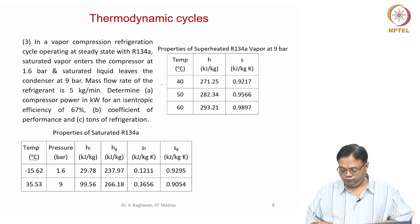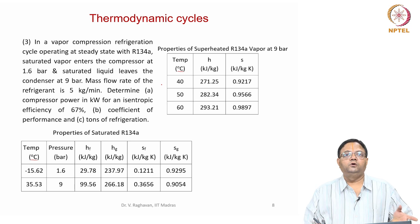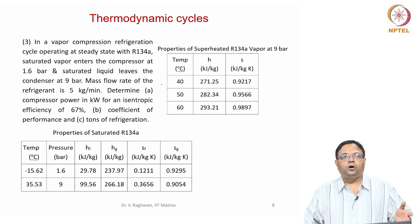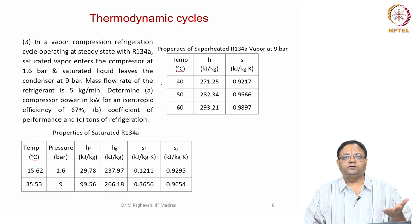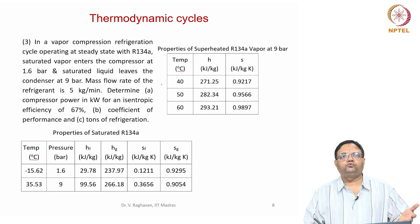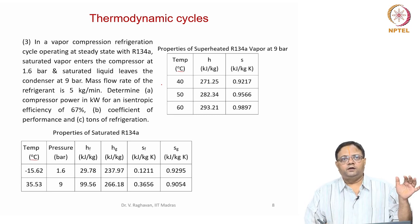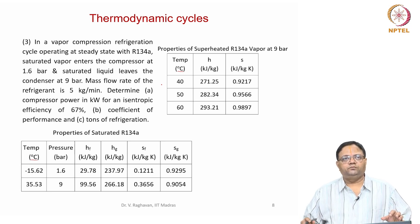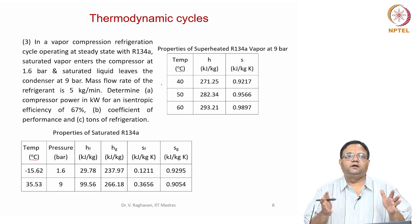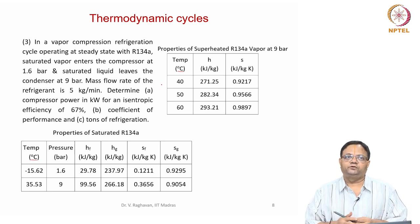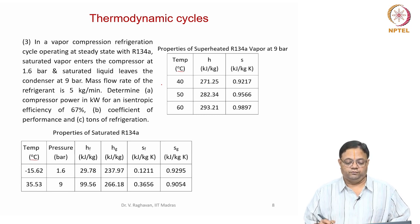Ok, third problem. These two problems — the first one is Rankine cycle, the second one — these two are power-producing cycles, where a heat input is given, heat rejection happens, but the net heat given to the cycle is positive. Similarly, the net work done by the cycle is also positive.